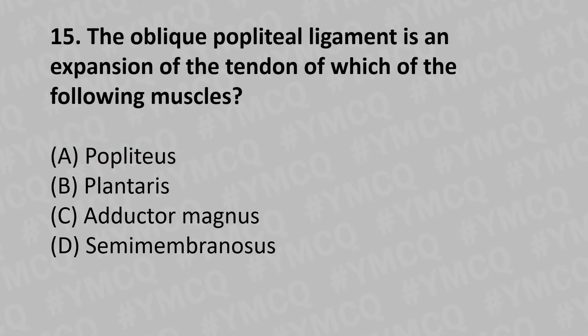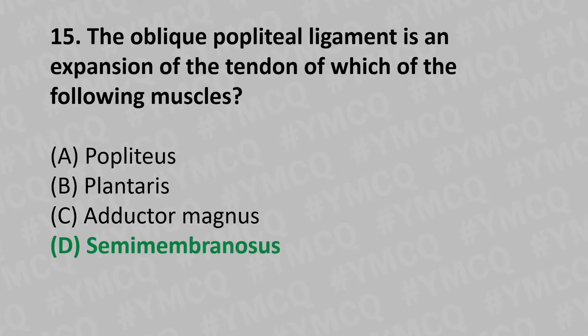Moving to our fifteenth question: the oblique popliteal ligament is an expansion of the tendon of which of the following muscles? Option A: popliteus, Option B: plantaris, Option C: adductor magnus, Option D: semimembranosus. And the answer is Option D: semimembranosus.